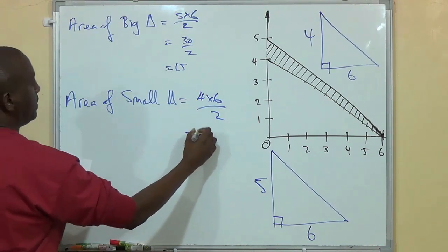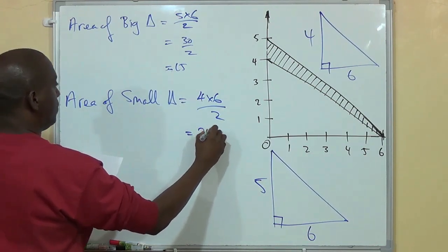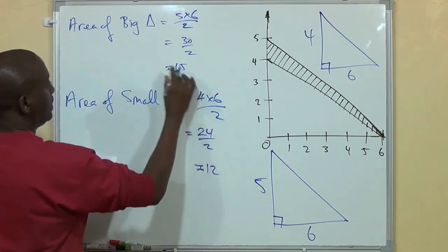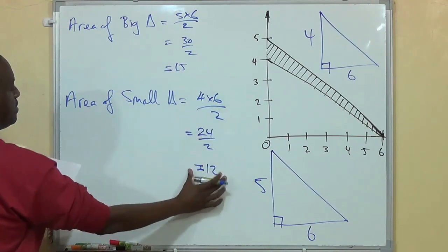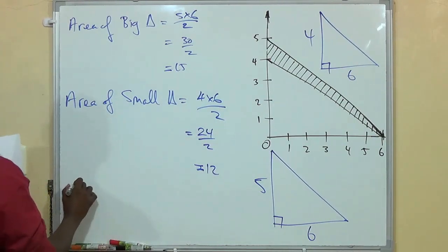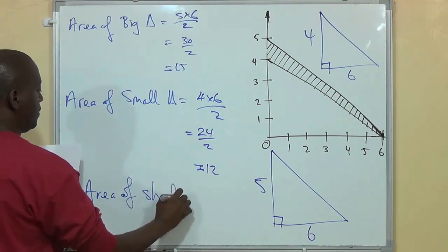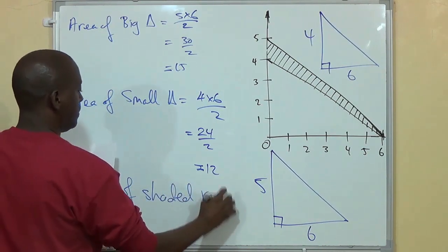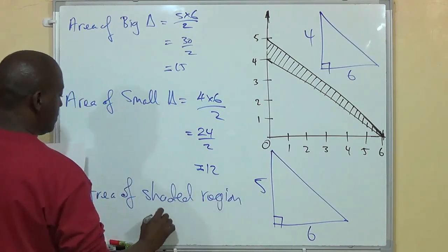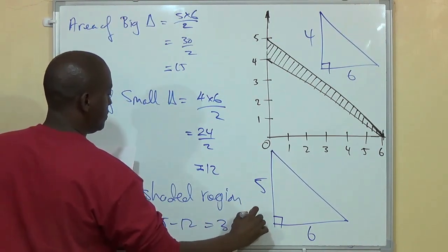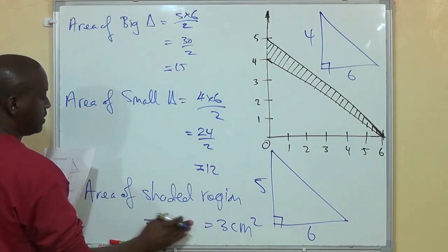So area of big triangle is 15, area of small triangle is 12. Therefore, area of shaded region is equal to 15 minus 12, which is equal to 3 centimeters squared.